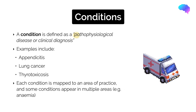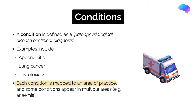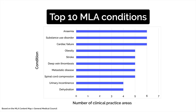A condition is defined as a pathophysiological disease or a clinical diagnosis, and examples include appendicitis, lung cancer, and thyrotoxicosis. Each condition is mapped to an area of practice, and some conditions appear in multiple areas — for example, anaemia is a broad condition which appears in multiple areas of clinical practice. Looking at which conditions appear most frequently, anaemia, substance use disorder, and cardiac failure are each mapped to six areas of clinical practice. Other important conditions include obesity, stroke, and deep vein thrombosis — these are really key conditions to know when preparing for the UK MLA.